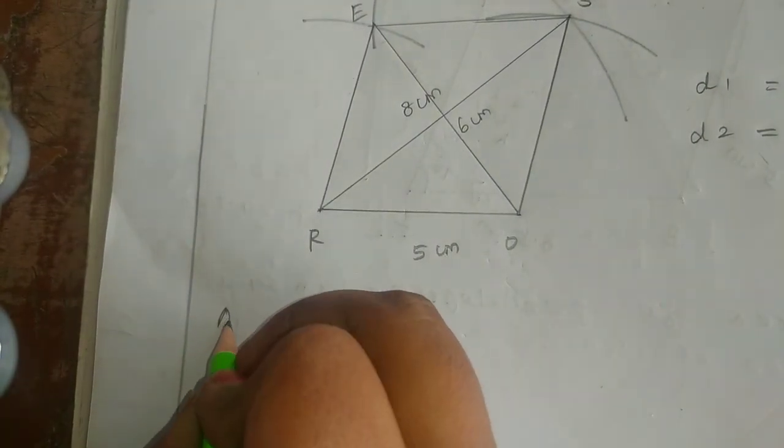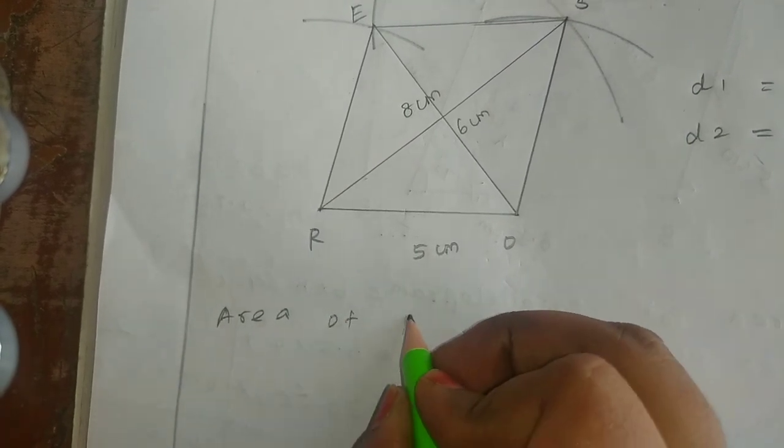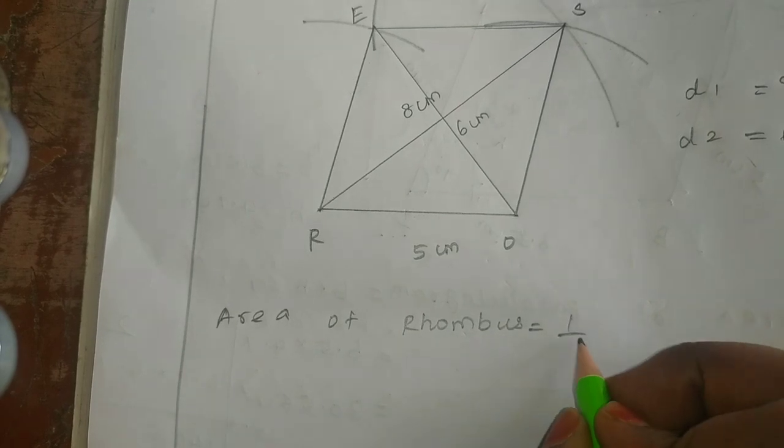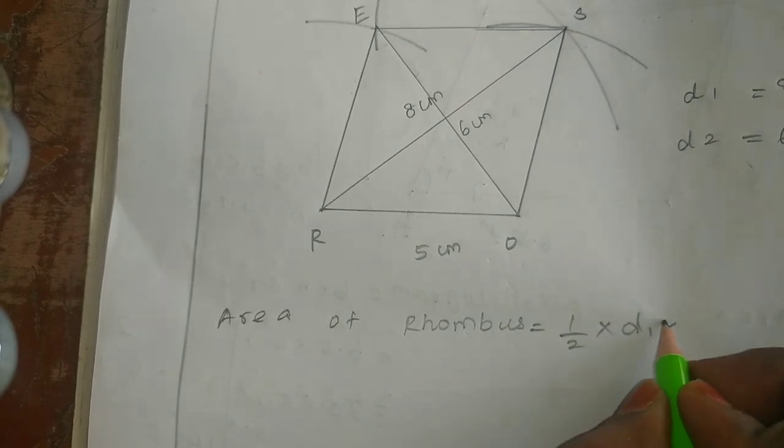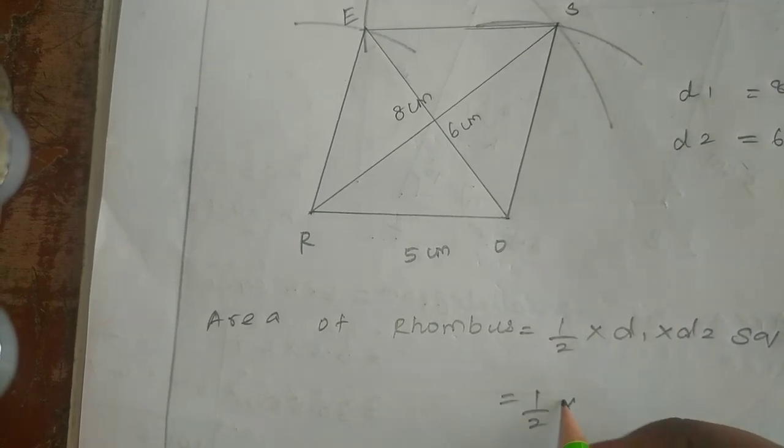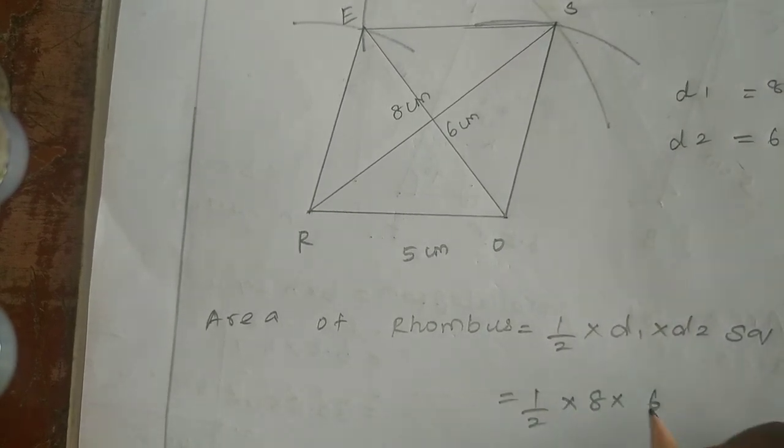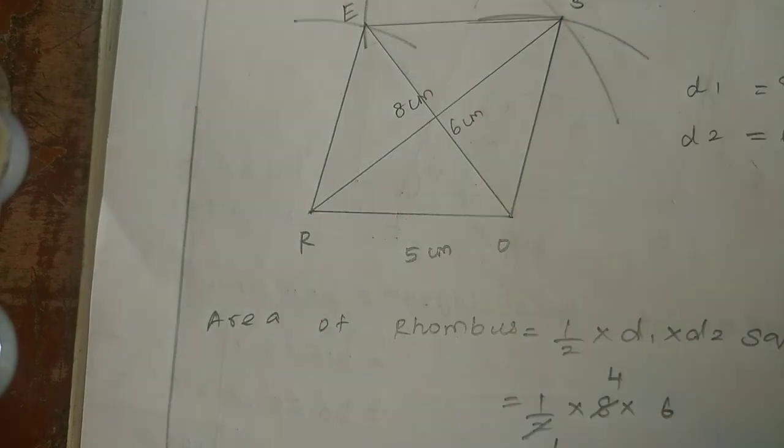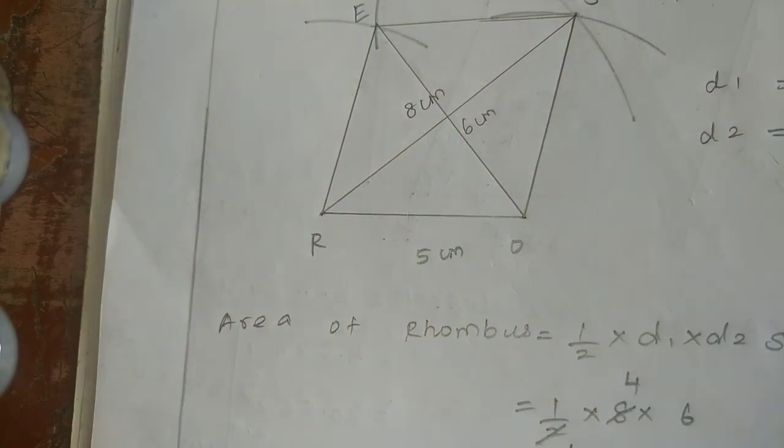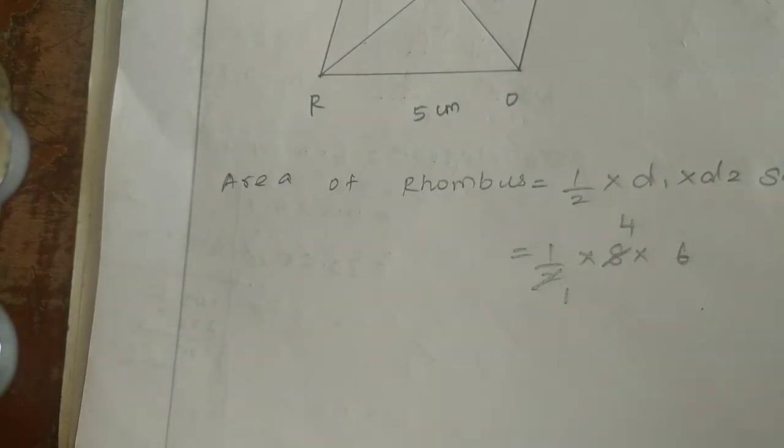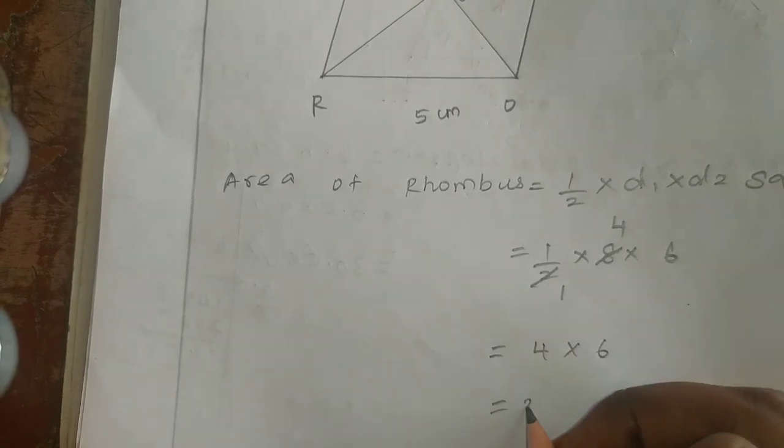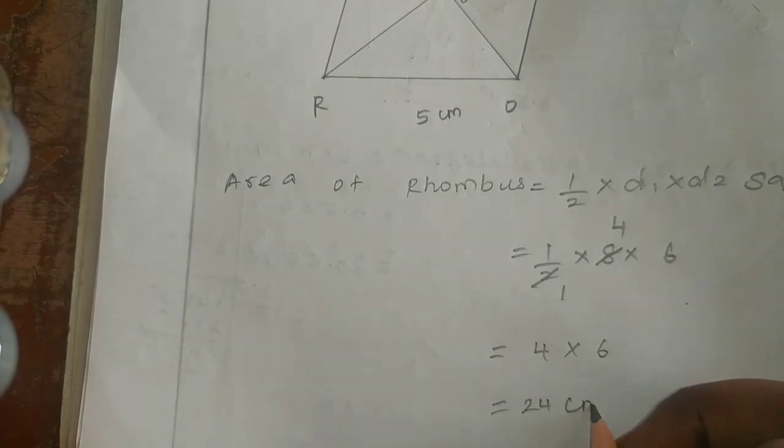What do you do? Area of rhombus. Formula: area of rhombus equals half into d1 into d2 square units. Half into d1 is 8, d2 is 6. 2 times 1. 2 times 4. 6 fours are 24. So 4 into 6 equals 24 cm square.